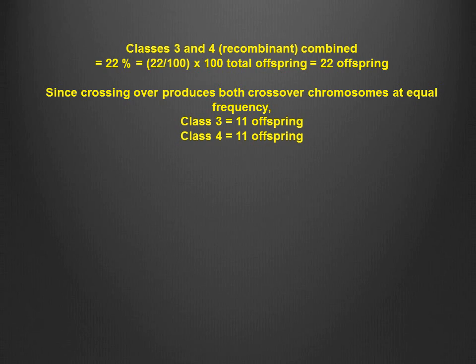Furthermore, since crossing over produces both crossover chromosomes at equal frequencies, each of these two classes make up 11 percent, or 11 of the 100 offspring.